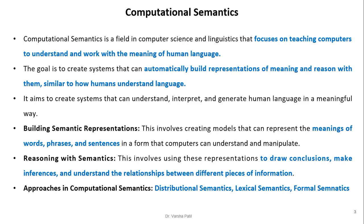There are key ways to achieve success using computational semantics. First, building a semantic representation involves creating models that can represent the meaning of words, phrases, and sentences in a form that a computer can understand and manipulate. Next, reasoning with semantics involves using these representations to draw conclusions, make inferences, and understand relationships between different pieces of information.